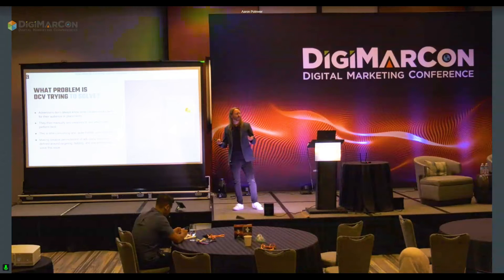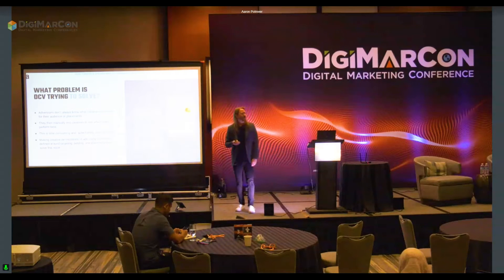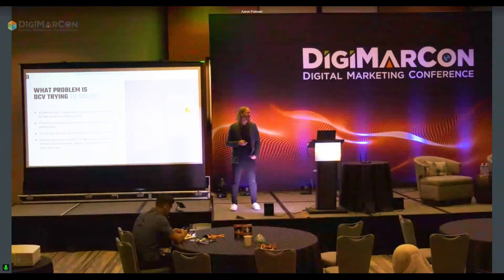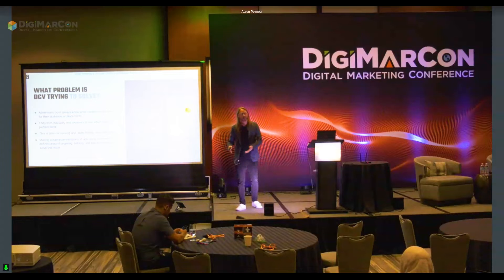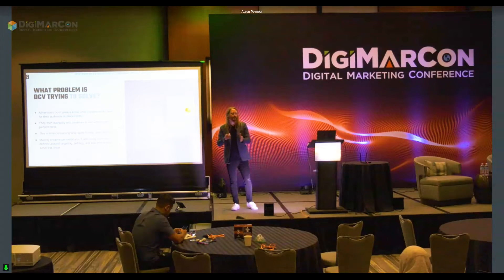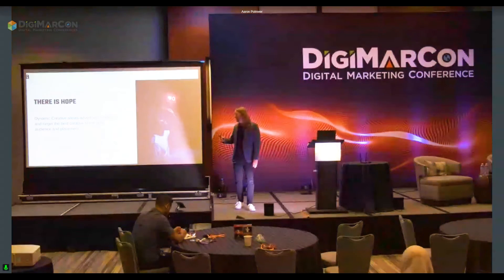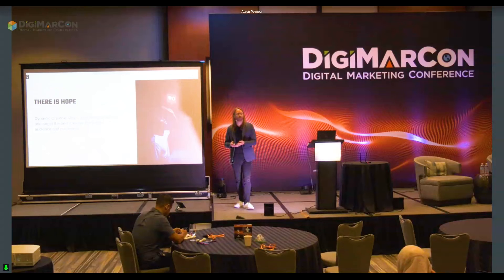We don't always know what creative works best for your audience or a placement. What do we do when we don't know? We test — manually test. It's time consuming and kind of a pain. You're A/B testing, building fully formed ads, and then testing over and over again, rinse and repeat. So we can make creative permutations of ads using different constraints — whether on bidding, targeting, or audiences — and this can help solve the issue. That's why there's some hope with dynamic creative: it allows us to identify and target the right audience and right placement, and actually know what's performing best for our campaign.